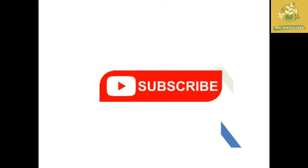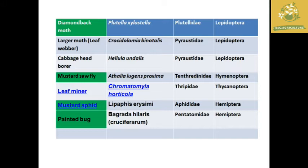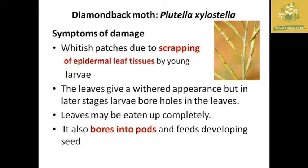In this video we are going to see about entomology crop-wise pest classification. I am going to cover the topic: pests of mustard. As usual, the first column is the common name of the insect, the second is scientific name, the third is family, and the fourth is order. First we are going to see about the diamondback moth, whose scientific name is Plutella xylostella.